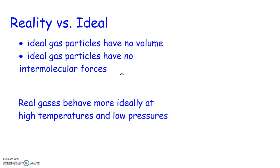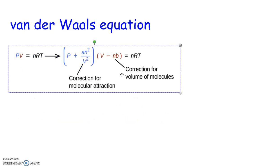Now if we're under conditions where things do not behave ideally, then in order to get a good answer we really need a different equation. And one of these equations that's used is called the van der Waals equation.